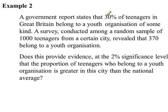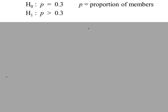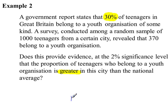Example 2, here we're testing a proportion of 30%, and we're looking for greater than. So this is a one-tail test, H0 and H1. And p-hat is equal to 370 out of 1,000. We're using a 2% significance level.